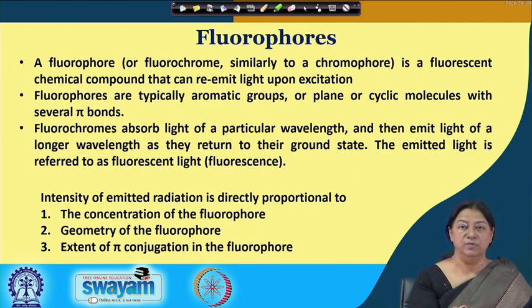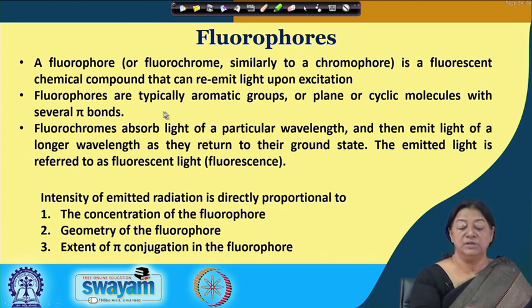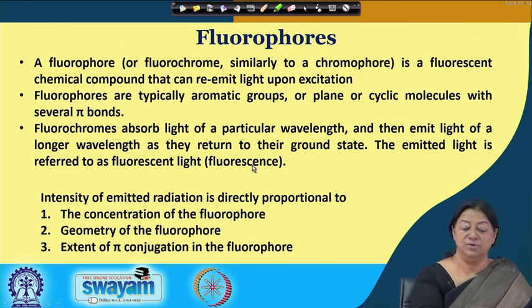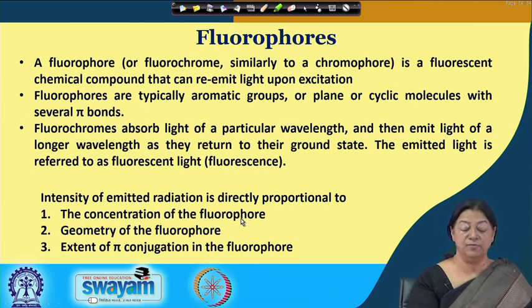When looking at UV visible spectroscopy we had a chromophore; now for fluorescence we have a fluorophore. A fluorophore is a fluorescent chemical compound that, after excitation, can re-emit light. Fluorophores are usually aromatic compounds — planar or cyclic molecules with several pi bonds — that absorb light at a particular wavelength and emit light of a longer wavelength as they return to their ground state. The emitted light is referred to as fluorescence, and it depends on the concentration of the fluorophore, the geometry, and the extent of pi conjugation.